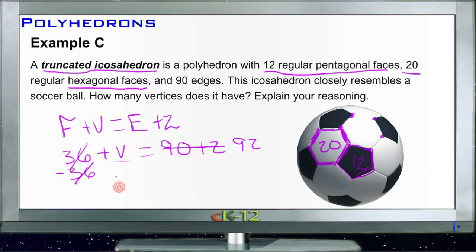We can put the 90 and the 2 together—we get 92. If we subtract 36 from each side, V will be by itself, and 92 minus 36—wait, 32, not 36—92 minus 32 is 60. So that gives us a total of 60 vertices, and our reasoning is that it follows Euler's theorem.